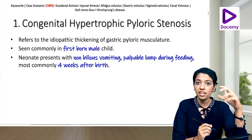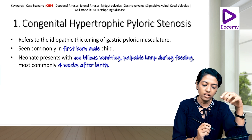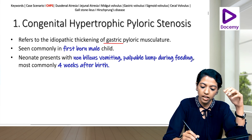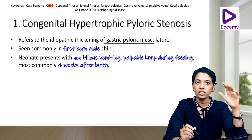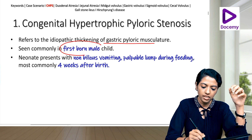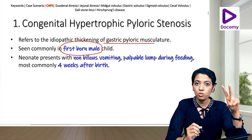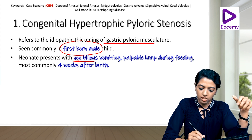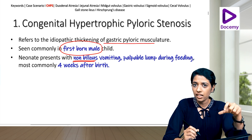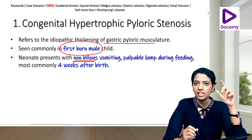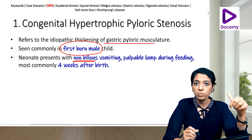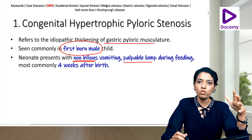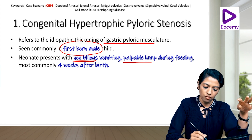Our first topic is congenital hypertrophic pyloric stenosis (CHPS). It refers to the idiopathic thickening of the gastric pyloric musculature and is commonly reported in the firstborn male child. The neonate presents with non-bilious vomiting, and there is a palpable lump during feeding.